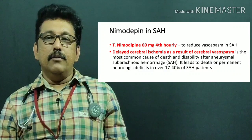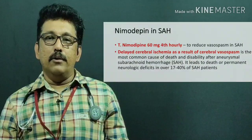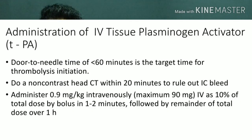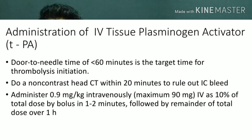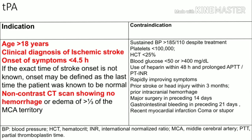Once stabilized and the CT scan rules out a bleed, proceed with IV tissue plasminogen activator (tPA) to lyse the clot. Door-to-needle time should be less than 60 minutes — CT within 20 minutes, rule out bleed, then thrombolyze. The dose of tPA is 0.9 mg/kg IV, maximum 90 mg: 10% of the total dose given as a bolus over 1–2 minutes, followed by the remaining 90% over one hour. Indications: age over 18, clinical diagnosis of ischemic stroke, symptom onset less than 4.5 hours, and no hemorrhage on CT.